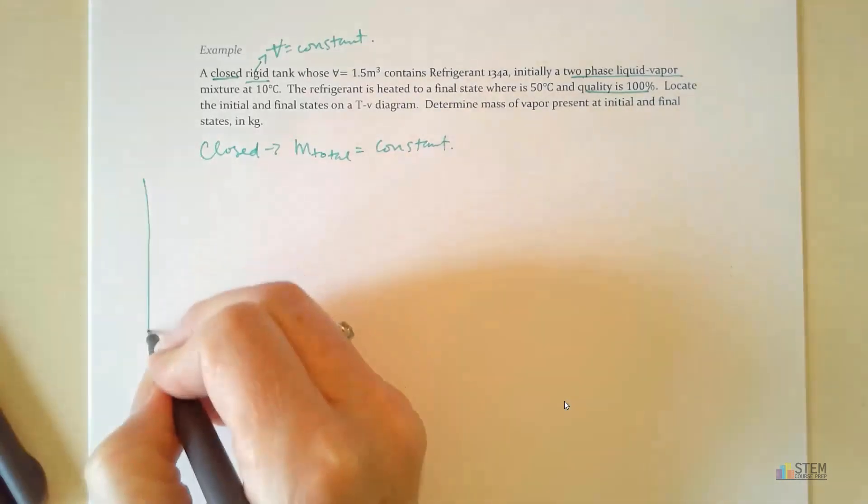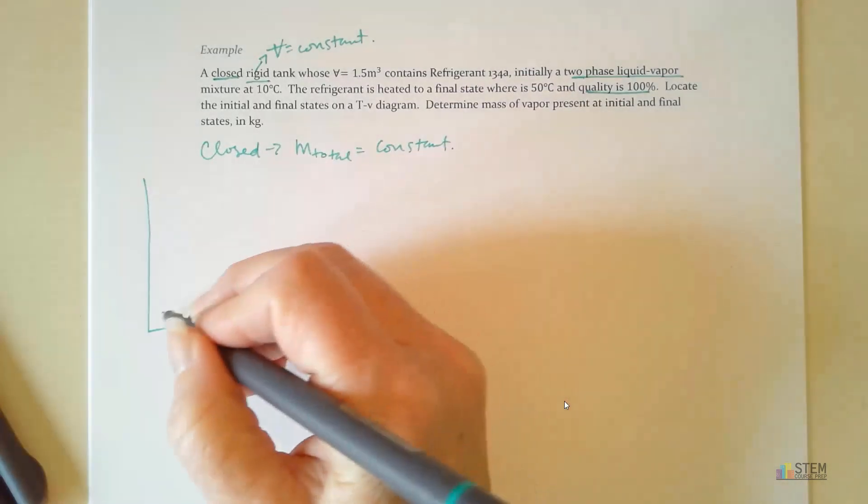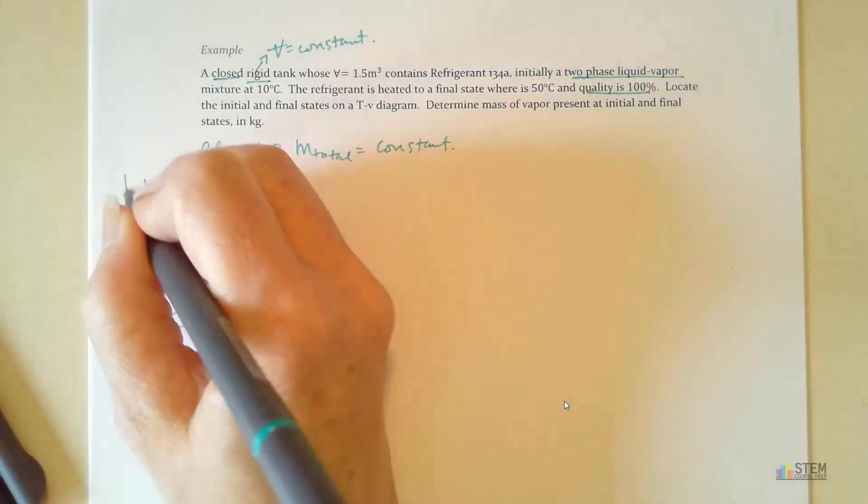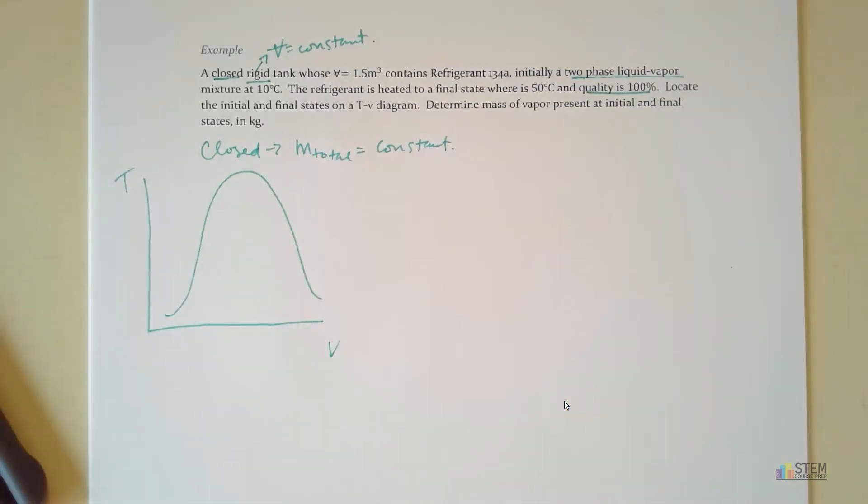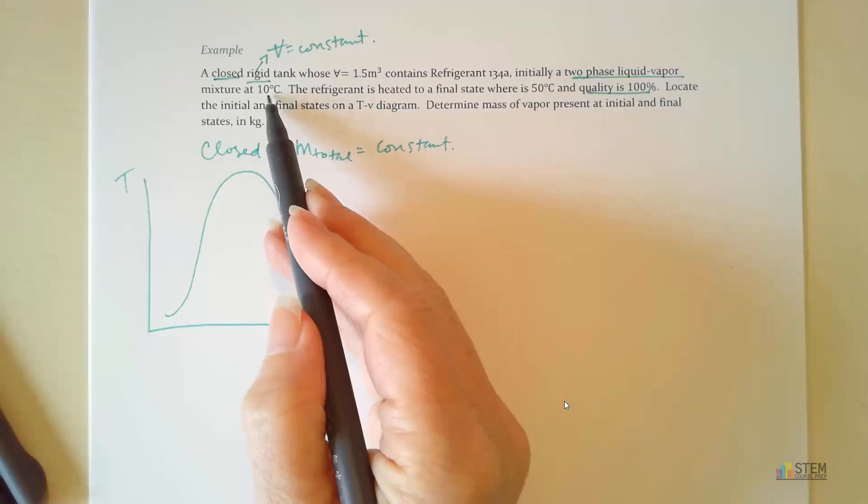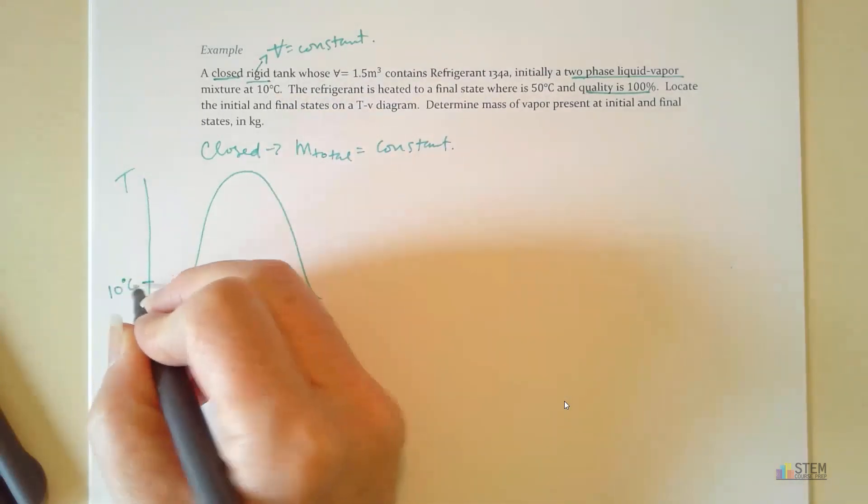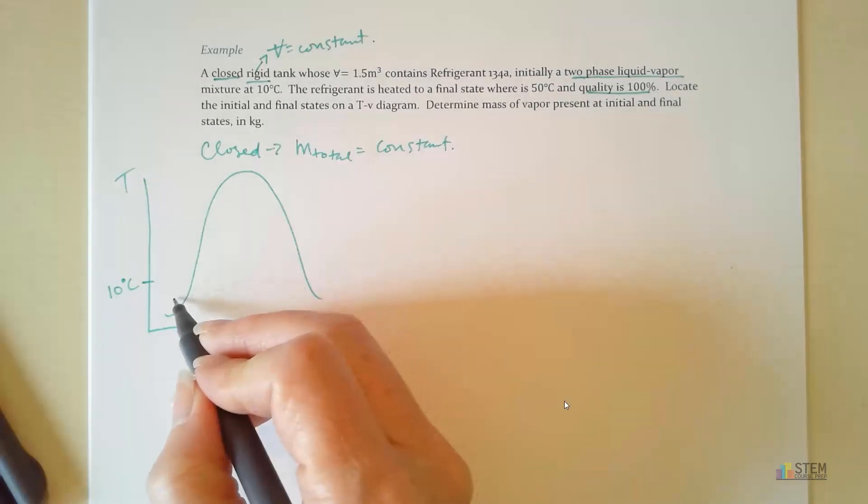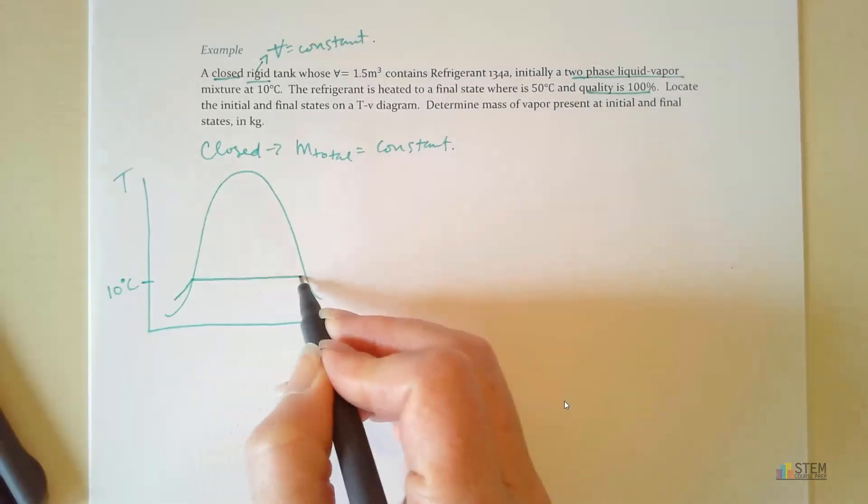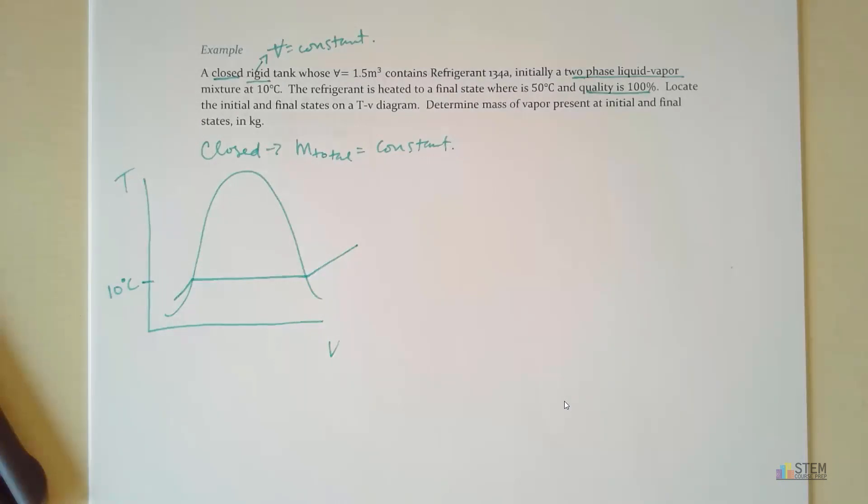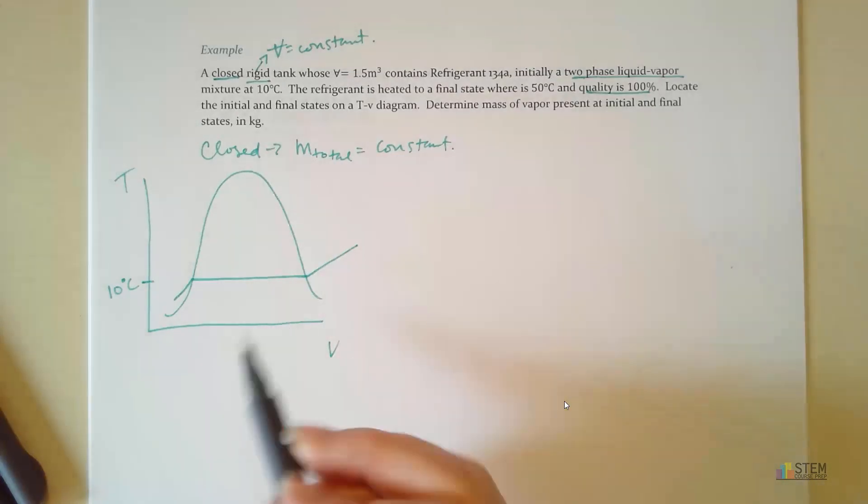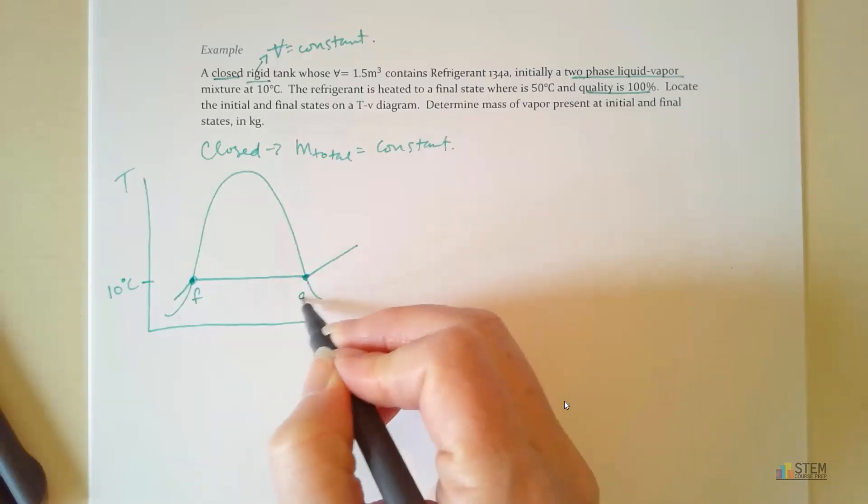Now, to get started, let's go ahead and draw our T-V diagram. At state one, we need to draw state one on here. First, before we do that, let's draw our temperature line. So we're initially at 10 degrees Celsius. Now we know on this diagram we're going to have a constant pressure line like that. Where this is 10 degrees, there's going to be a point F and a point G here.